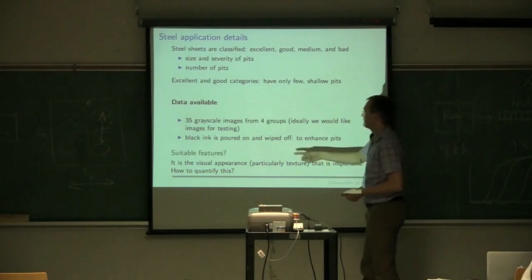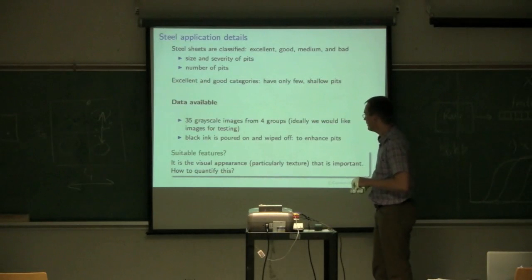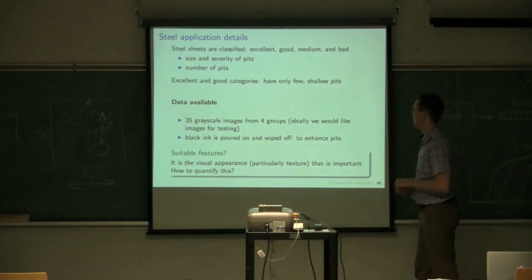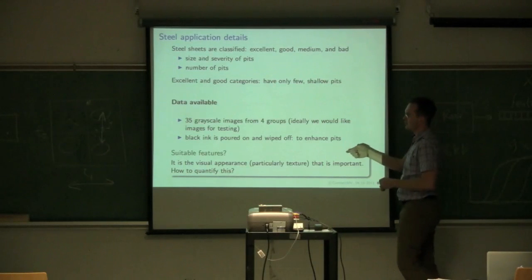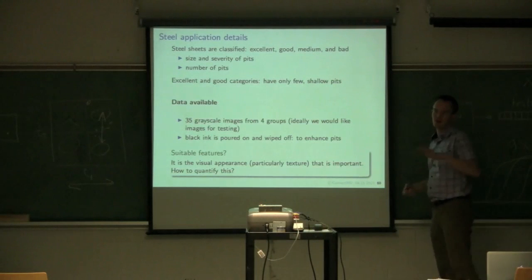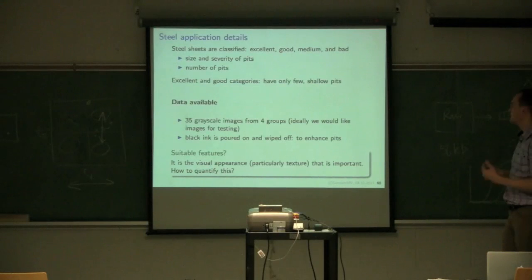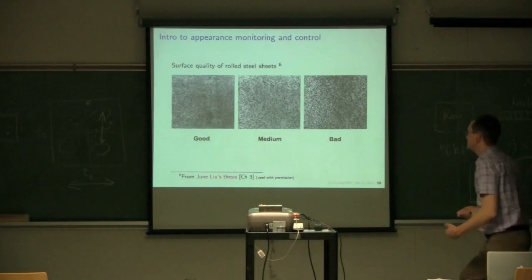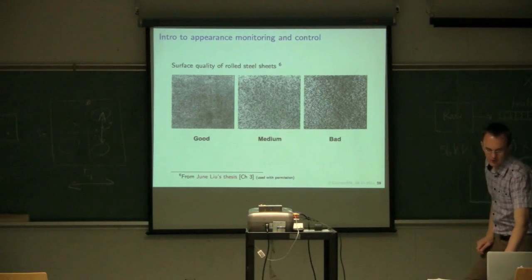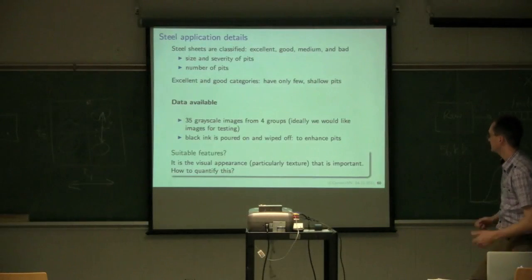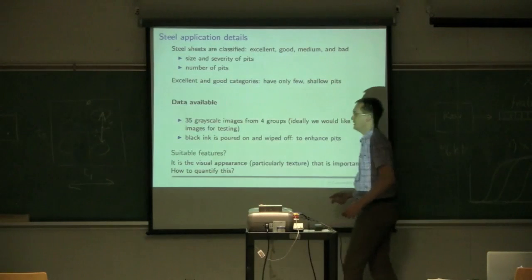Bad quality is many holes with fairly large pit sizes. So the smaller those holes and the fewer they are, the higher the quality of that steel and the more value you can get for it on the market. So size and severity of the pitting is what you're visually trying to look for in an image. And what Jude had available to him was 35 grayscale images. So we're not dealing with a multivariate image here. We're just dealing with a single, flat, two-dimensional matrix.